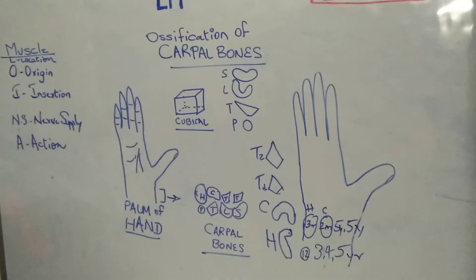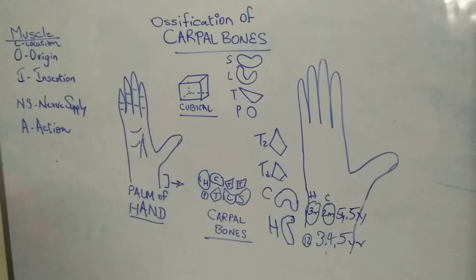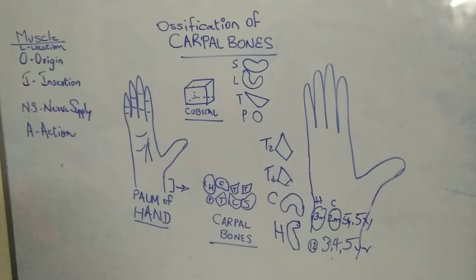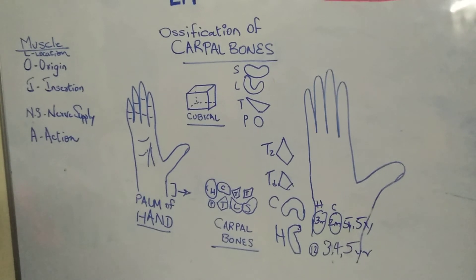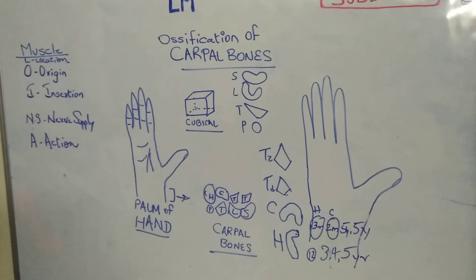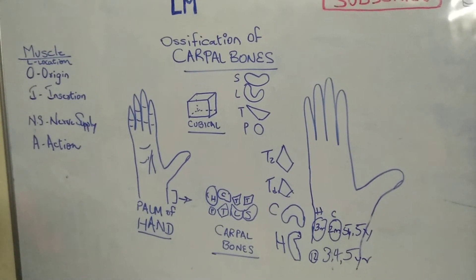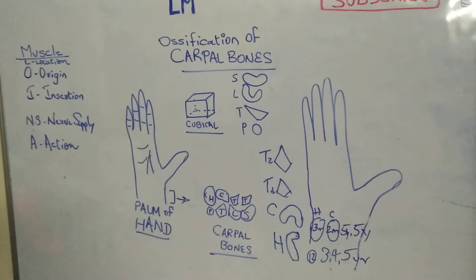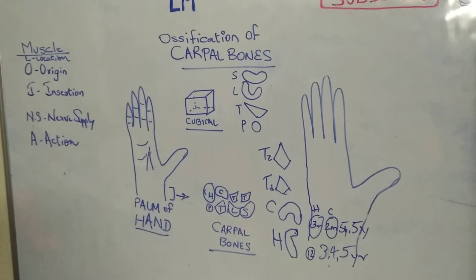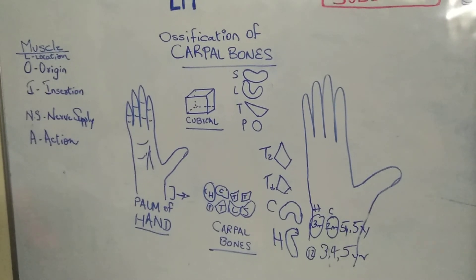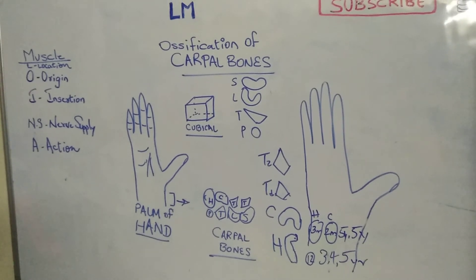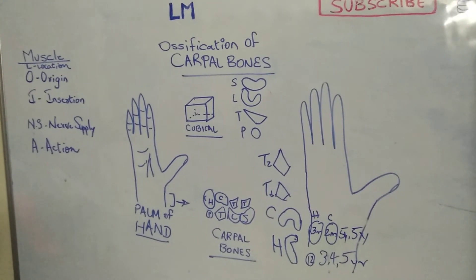At the third birthday, one additional bone appears — triquetral. At the fourth birthday, one more bone comes — lunate — so there are four bones visible at the fourth birthday. At the fifth birthday, three more bones appear together: scaphoid, trapezium, and trapezoid. So from the fourth birthday's four bones, three more are added, giving seven carpal bones visible from the fifth birthday.